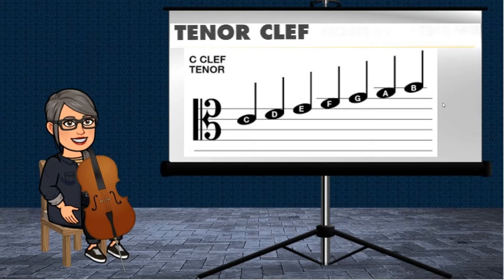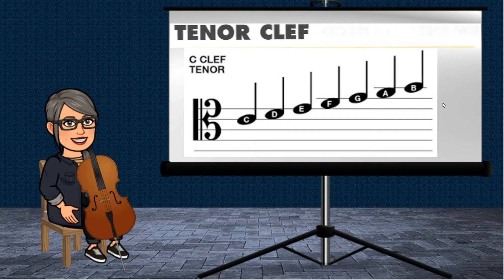All right, tenor clef. As I mentioned before, it is known as C clef, and it is on the fourth line of the music staff, and this is where C is located. Now, this C right here would be your second finger on the A string in first position, and then you would travel all the way up on the A string to get the rest of these notes.